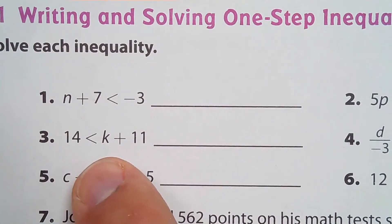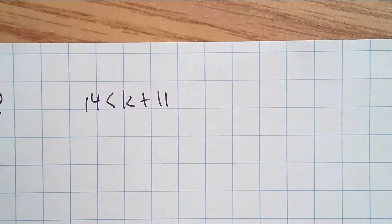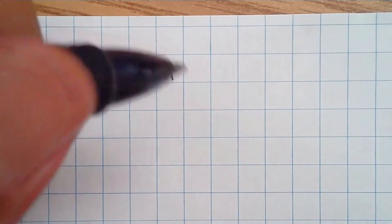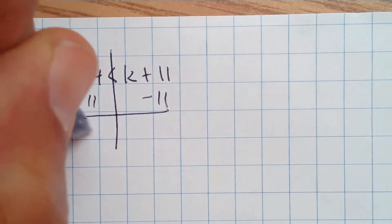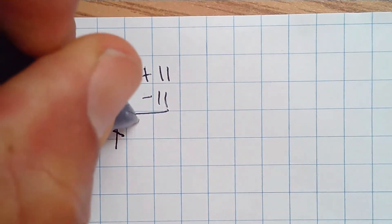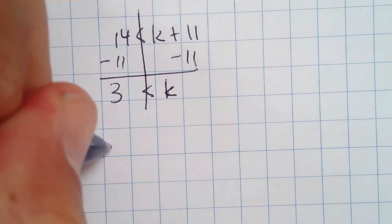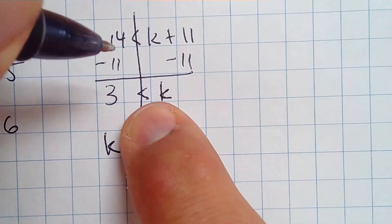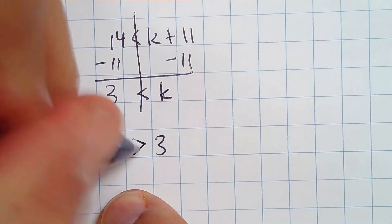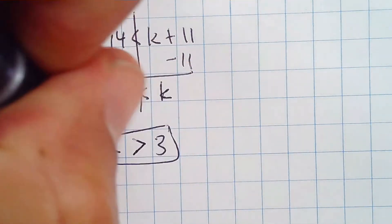Number 3: 14 is less than k plus 11. Treating this like an equation, I would subtract 11 from both sides. 14 minus 11 is 3, so 3 is less than k. The textbook publishers want you to write the k first and the 3 second. Notice how it's open to the k — we keep it open to the k. These two statements mean the exact same thing.